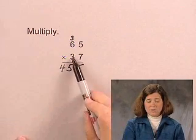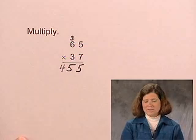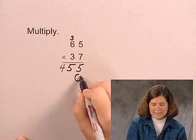Now we multiply 30 times 65. In order to do this, think of 30 as 3 tens. Write a 0 to show we're multiplying by tens.